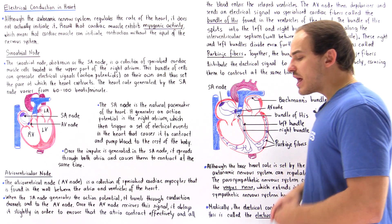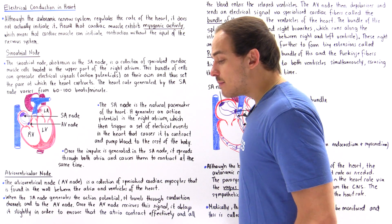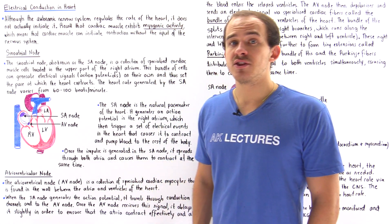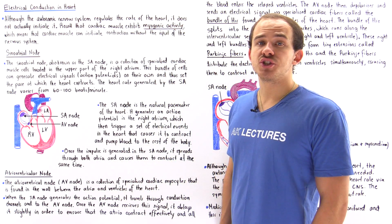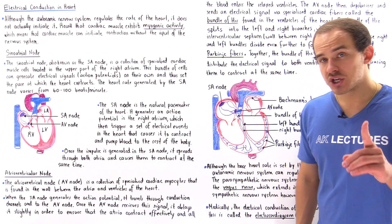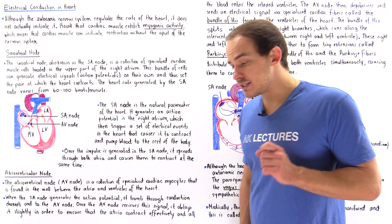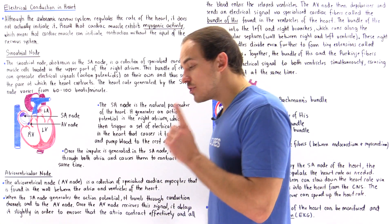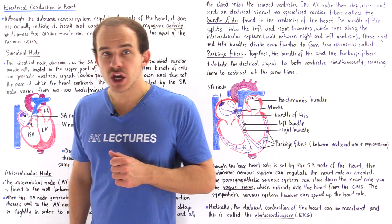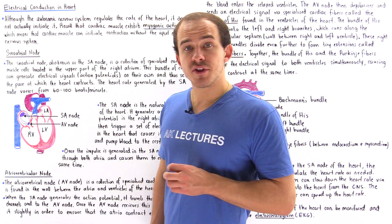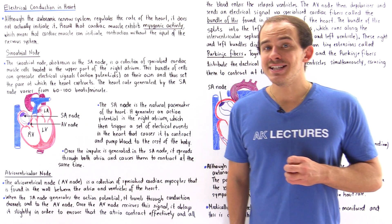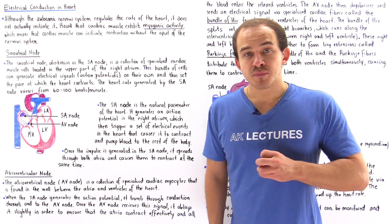The autonomic nervous system is capable of regulating the rate at which the heart contracts. But, and this is an important but, even though the autonomic nervous system regulates the beat of the heart, it doesn't initiate that beat.